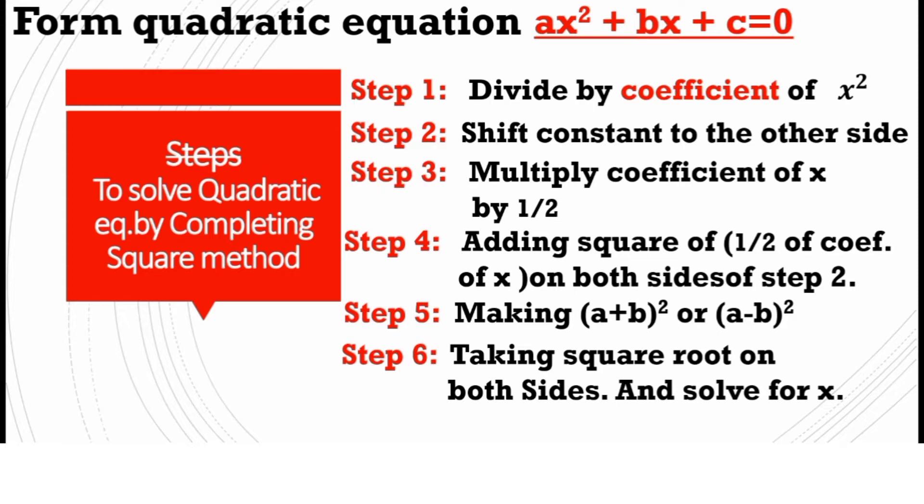Step 1 is divide by coefficient of x squared. The standard form of quadratic equation ax² + bx + c, divide the whole equation by coefficient of x squared, that is a. So a is divided by a, b is divided by a, and c is divided by a.